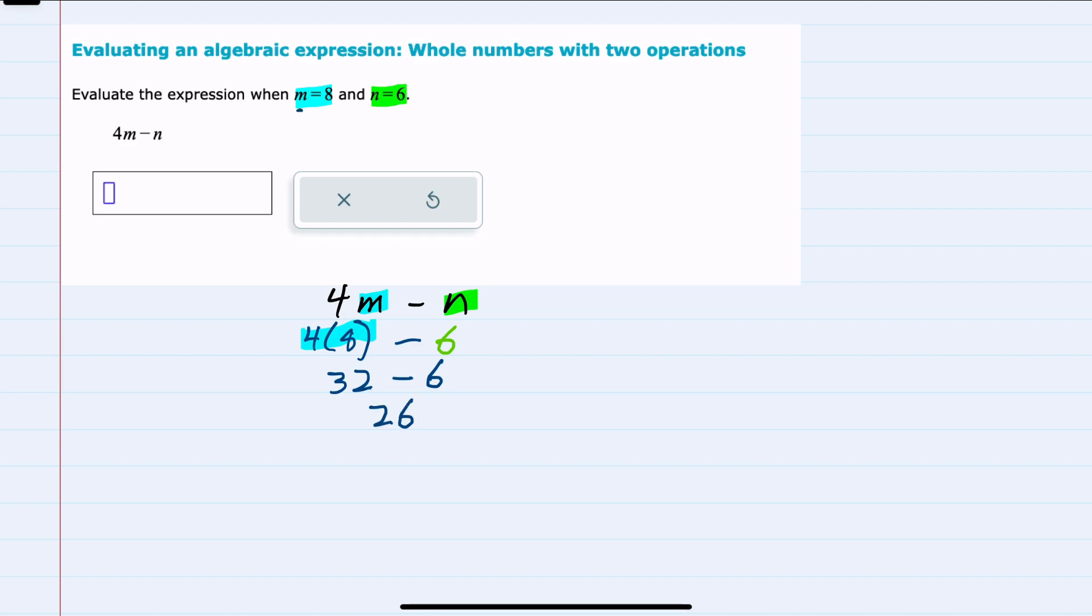So by substituting these values for m and n, and then following the order of operations, we get our solution of 26.